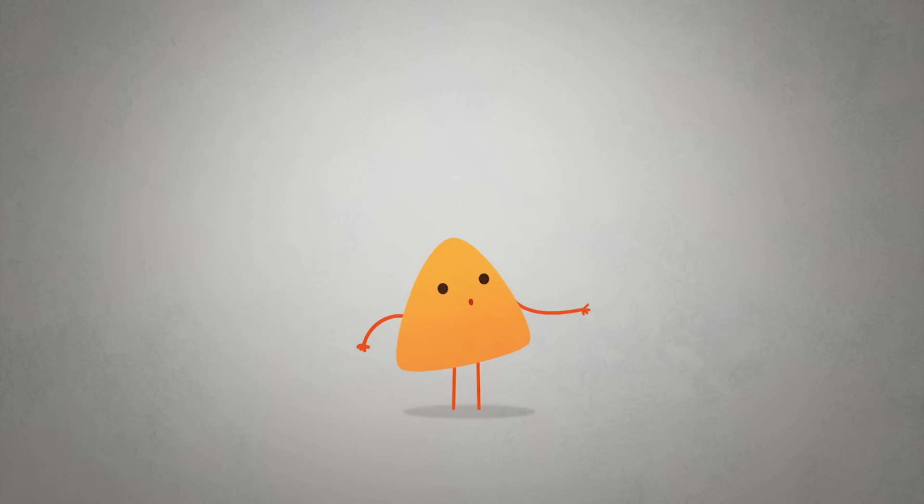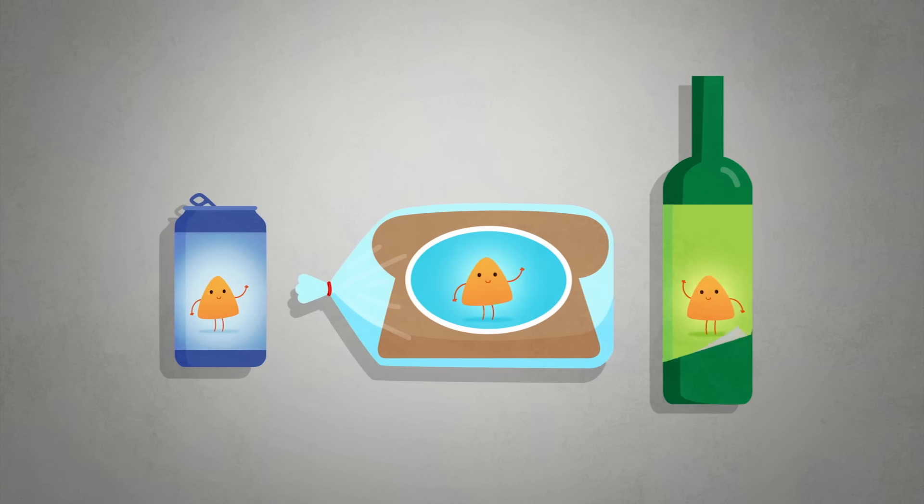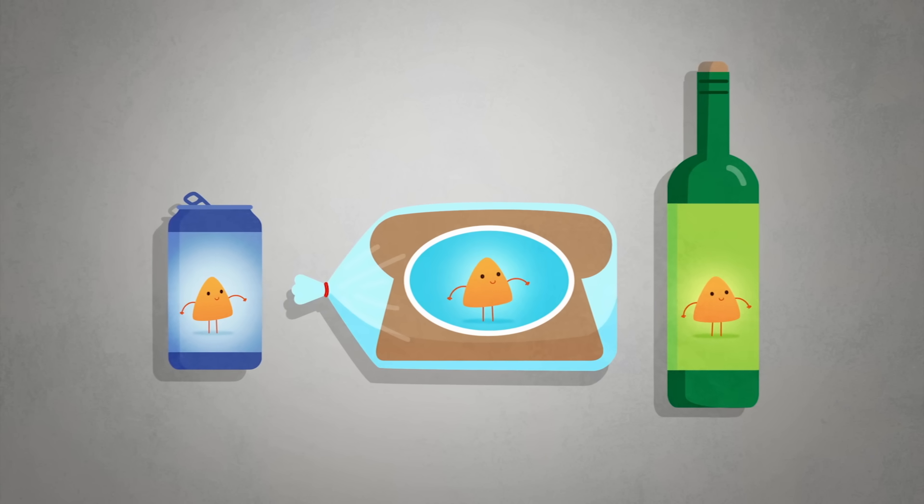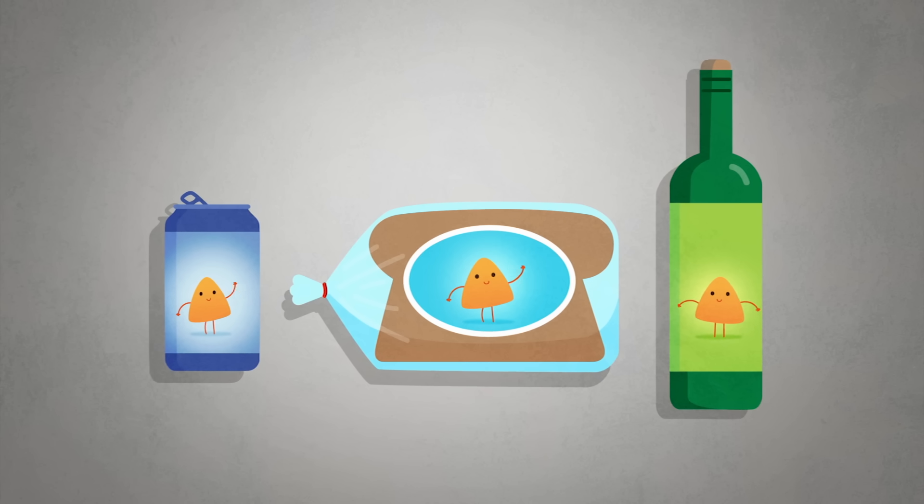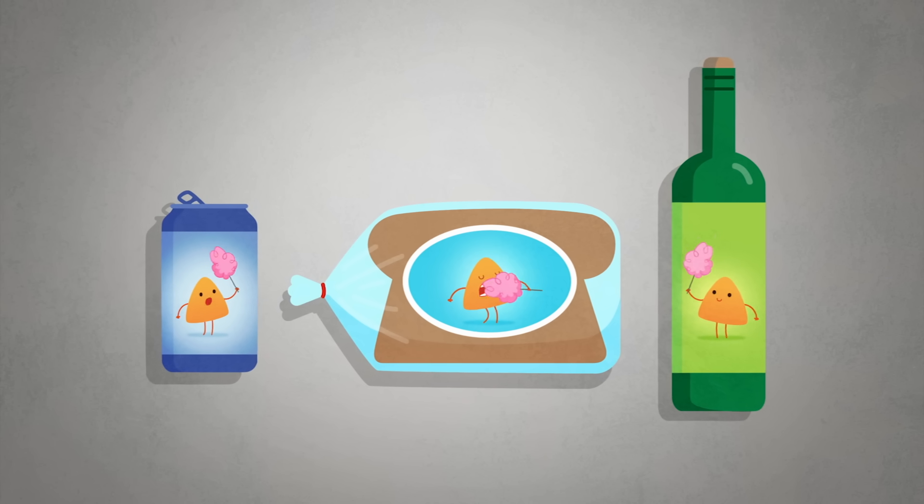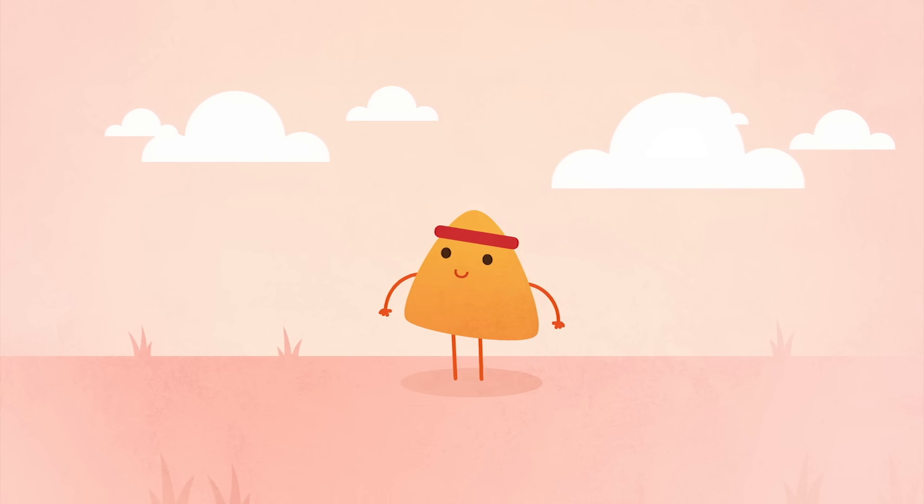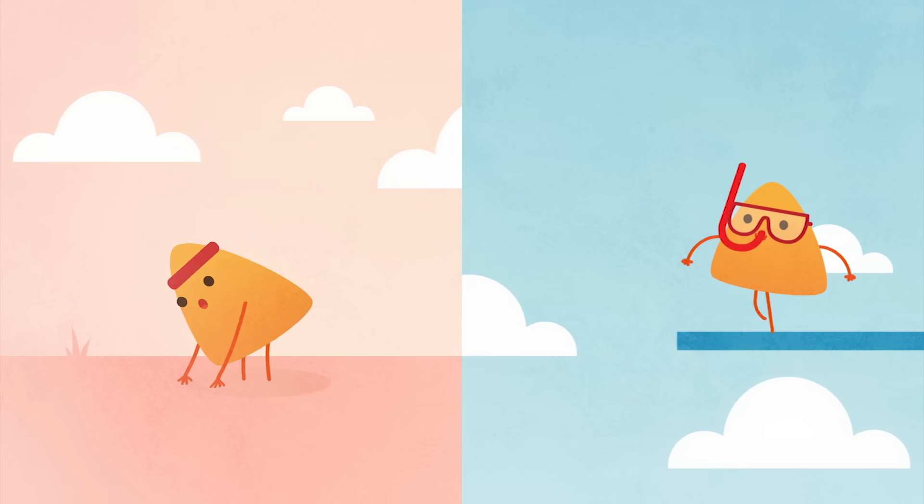Let's start with yeast. Yeast are single-celled fungi used to make bread, beer, and wine, among other products. Yeast break down carbohydrates like sugar to get energy and the molecules they need to function. They have two different ways to do this: the oxygen-dependent or aerobic pathway and the oxygen-independent anaerobic pathway, which is also called fermentation.